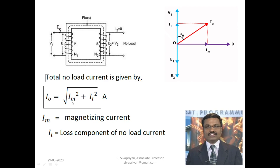IM is the magnetizing current and IL is the loss component current. To calculate the no-load current, we need to calculate both IM and IL. To calculate the magnetizing current IM, we need to calculate the MMF required for the full transformer. Once we know the total MMF, we can find IM. To calculate IL, we need to find the total core loss or iron loss. Once we have both, we add them to get I0.